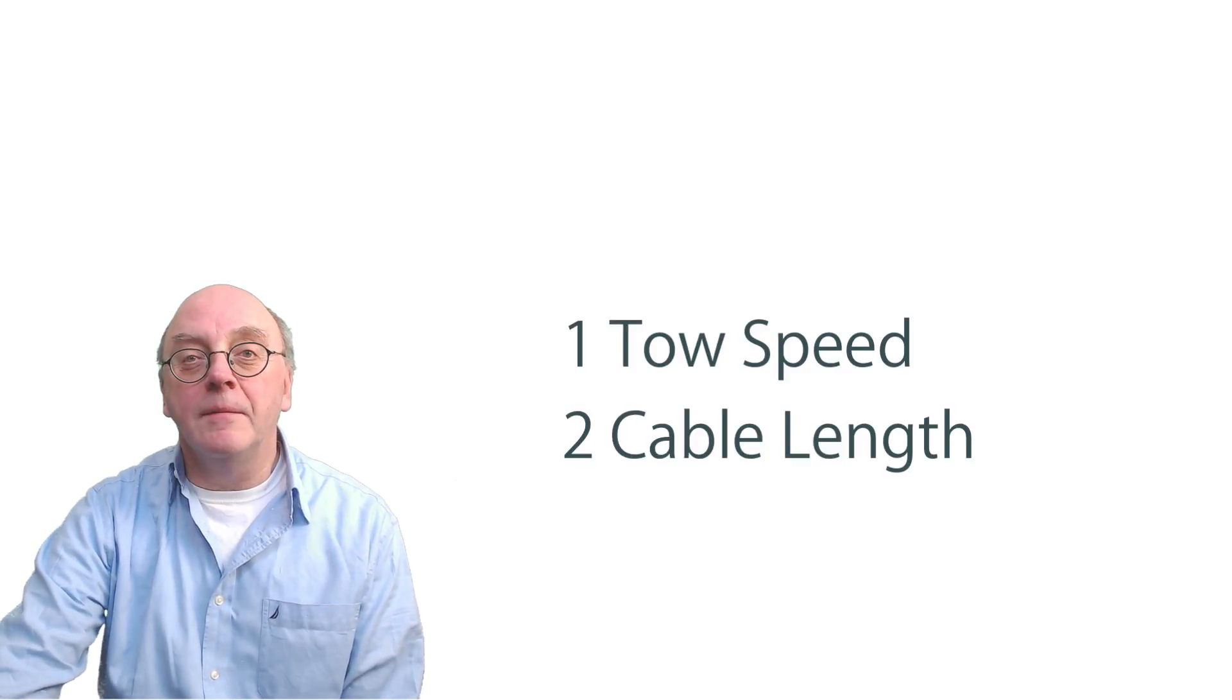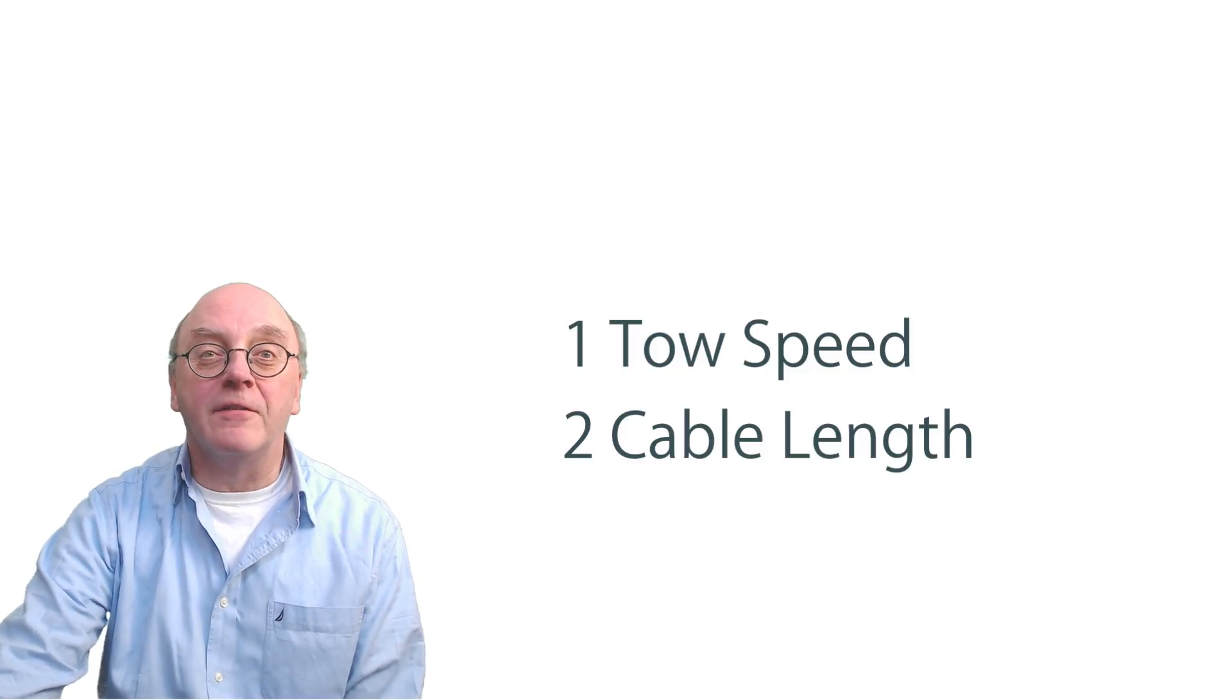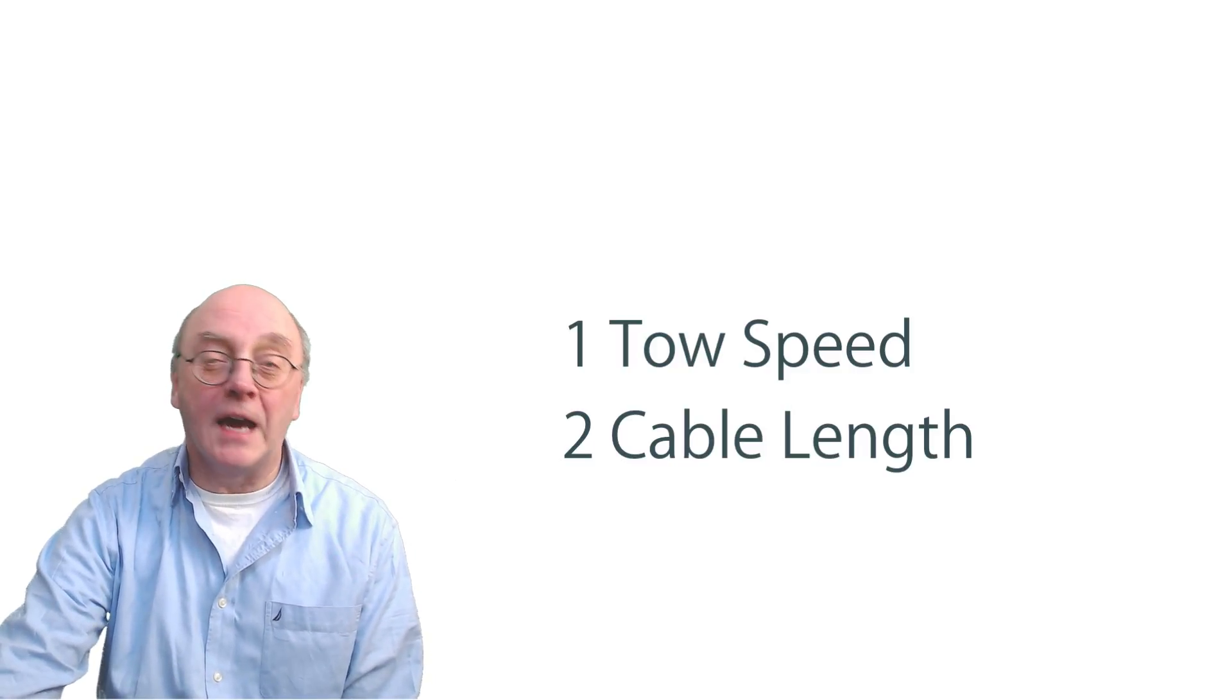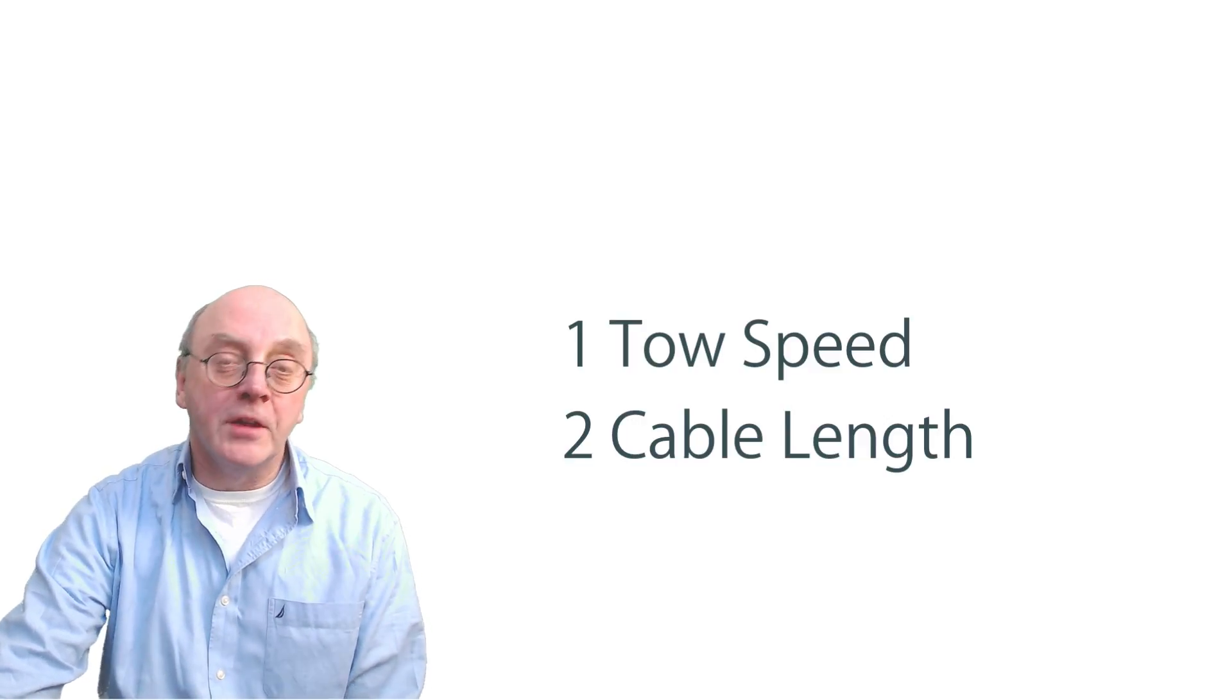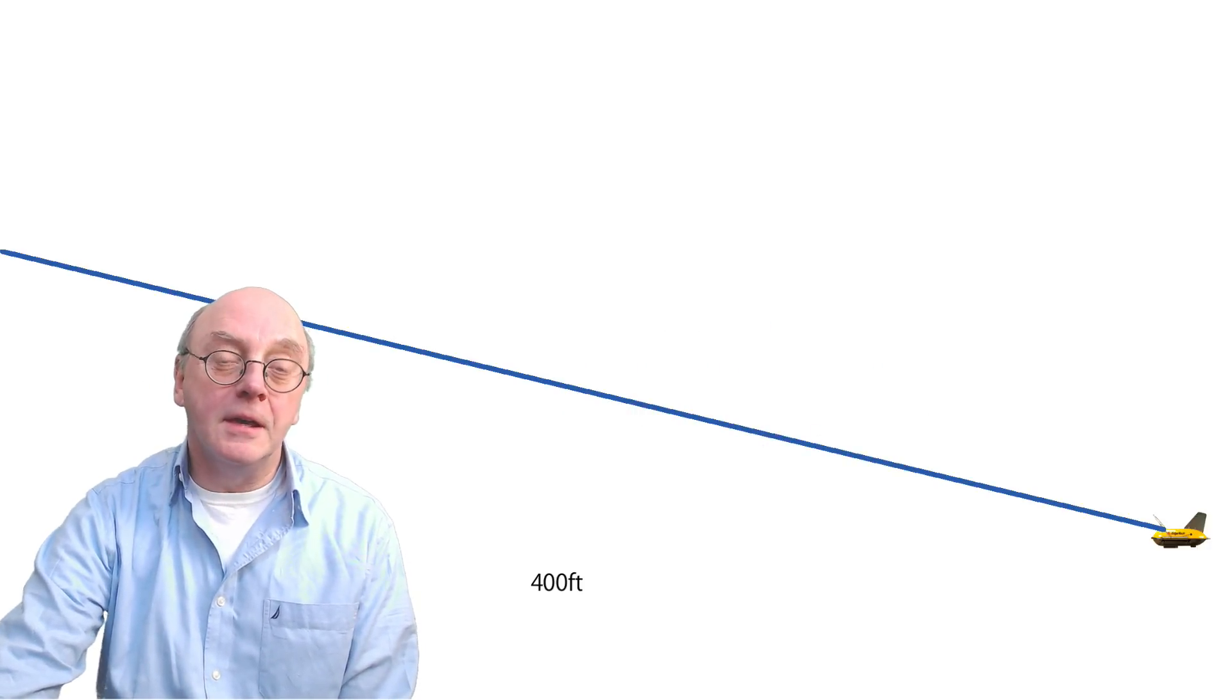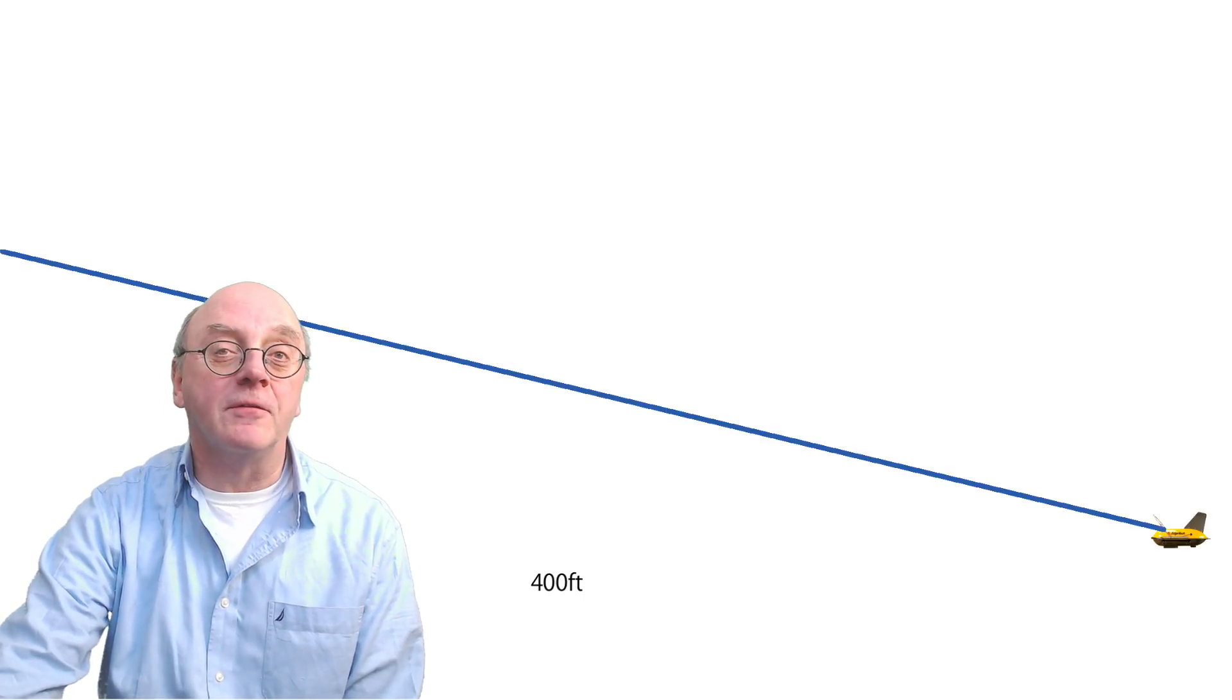In a normal survey, speed is about five kilometres and typical ratio of cable length to tow depth is four to one. This means 400 feet of cable is needed to tow at a depth of 100 feet.